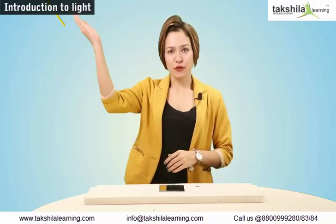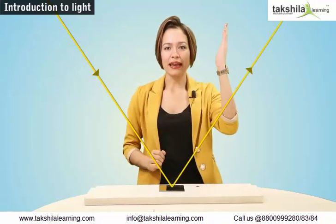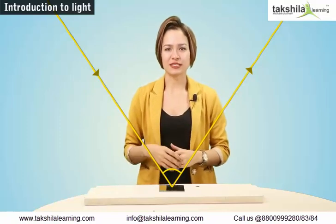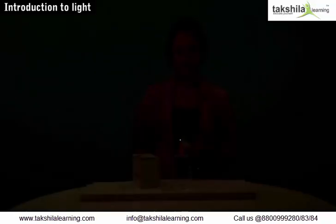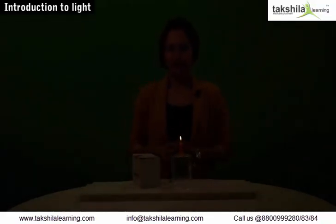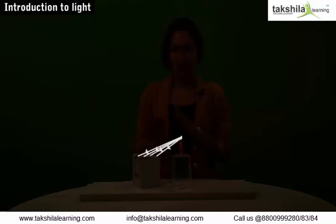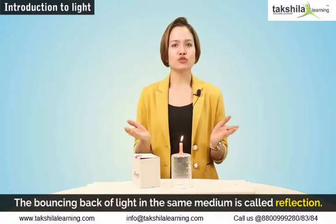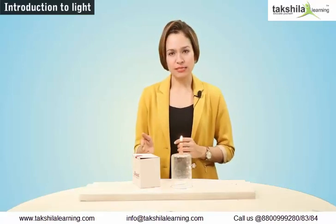For now, we will consider light as a ray and discuss how light bounces back and gets deflected at an angle on hitting a surface. We are in a dark room — I cannot see anything as there is no light source. I have a candle and a matchbox. I will now light this candle. Now I can see the things around. The lit candle is the light source; the light travels to the box kept nearby and comes back into our eye after getting reflected. The bouncing back of light in the same medium is called reflection.